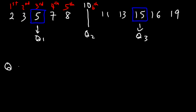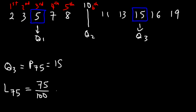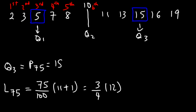For the third quartile — the 75th percentile, which we know to be 15 — using the same formula: 75/100 × (11 + 1) = (3/4) × 12 = 9. So the ninth data point is 15, which is the third quartile.